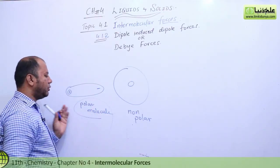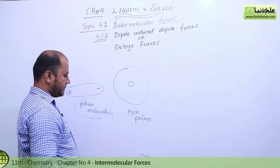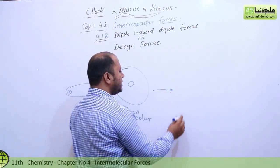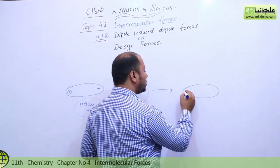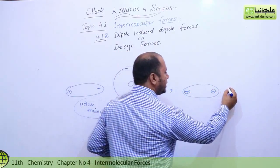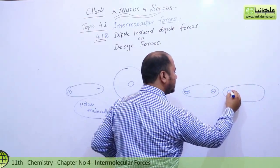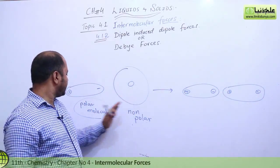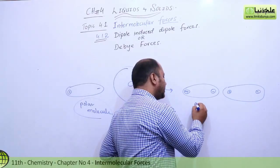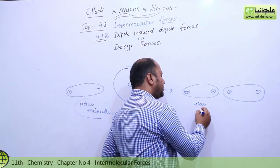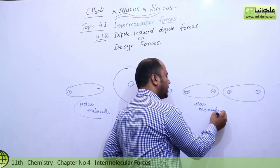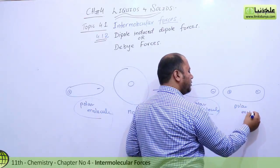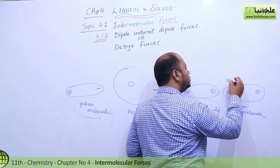Now students, this is polar and non-polar. But what happens when this non-polar molecule is near a polar molecule? So this non-polar will also become polar — it will be induced polar. Why is it induced polar? Because this polar molecule is the inducer.